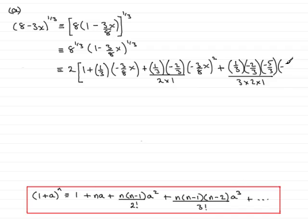And this is multiplied by a cubed. a, we know, is minus 3 eighths x. And that is all cubed. And don't forget to put and so on on the end there, just about squeeze that in, plus and 3 dots.